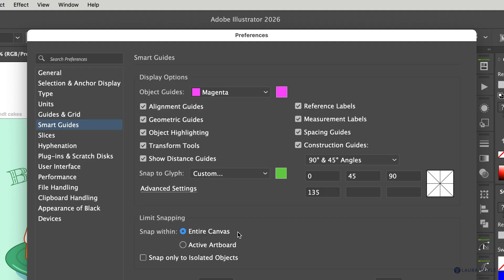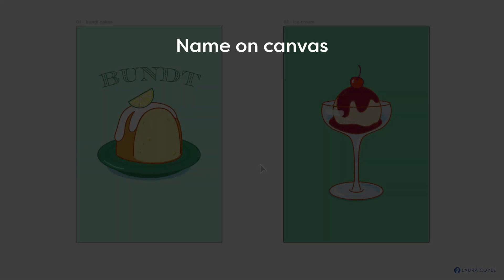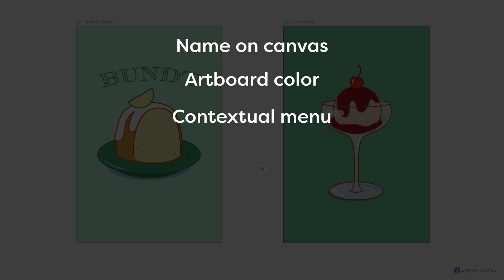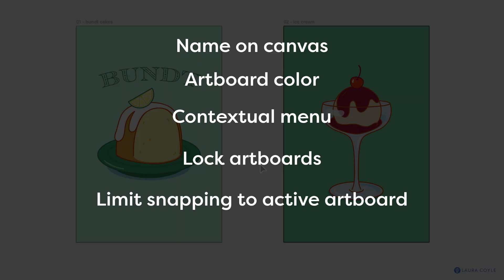And those are the new improvements to artboards: name on canvas, artboard color, a new contextual menu inside artboard editing mode, the ability to lock artboards, and the ability to limit snapping to artboards.